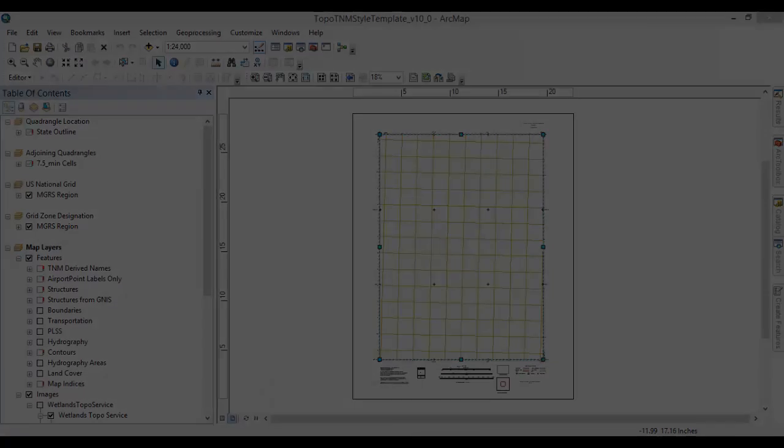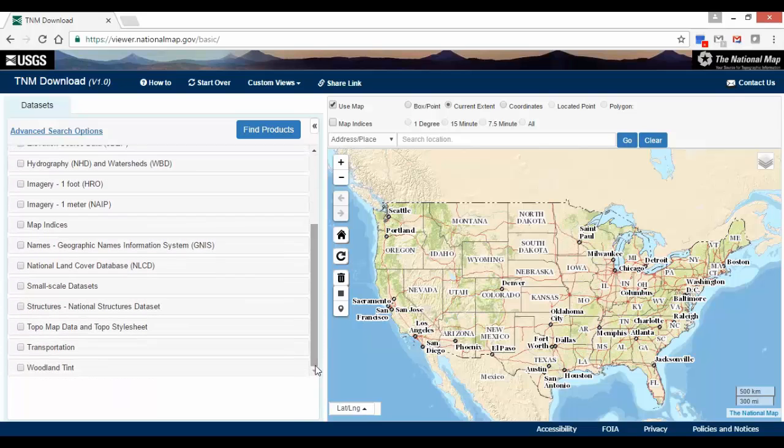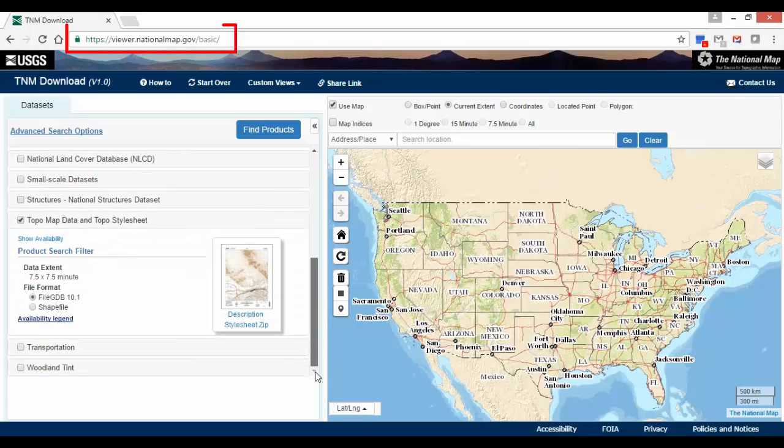This style template may be linked to any data source downloaded from the National Map. However, for best results in symbolization and labeling, it is recommended that you use the Topo Map Vector data products. These products are being produced and are available now for download from the National Map download client.